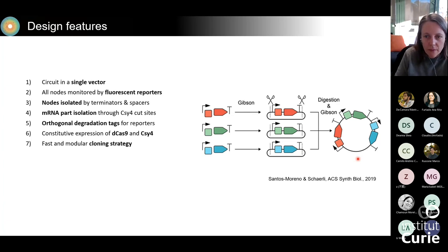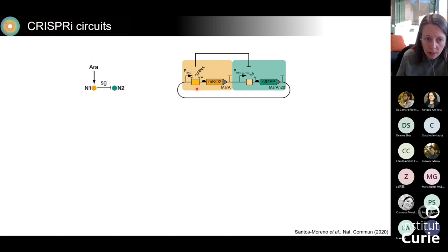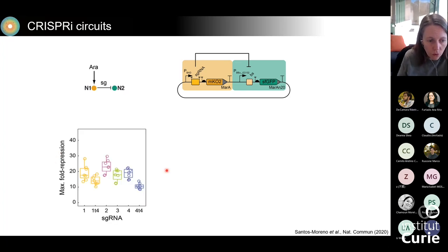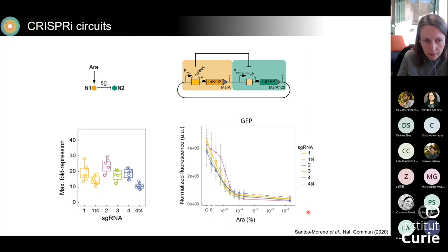We were then ready to start testing our CRISPRi circuits. We started with a simple setup where we used arabinose to induce expression of a single guide RNA that would then inhibit transcription of a downstream promoter. Using a set of published single guide RNAs, we observed about 20-fold repression, and we can manipulate the strength of repression by truncating the guide RNA by four nucleotides to get weaker repression. Importantly, the effect was dose-dependent — the more arabinose we add, the more single guide RNA is produced and the more repression we observe.